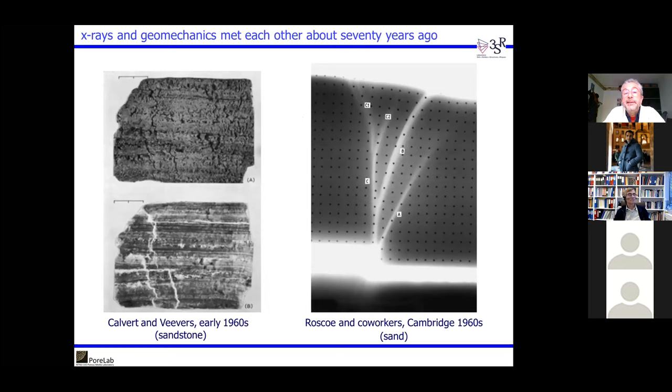X-rays and geomechanics met about 70 years ago, so this is not really new. These are historical pictures: on the left, an early 1960s radiograph of sandstone; on the right, a famous Cambridge example in which shear dilating bands are imaged and made evident through X-ray radiology.